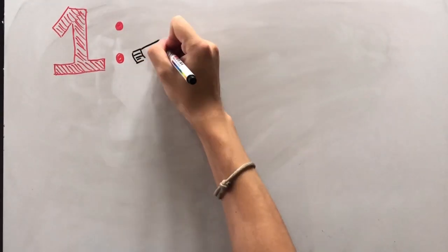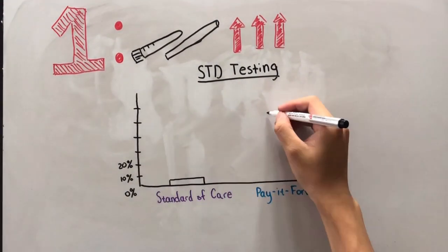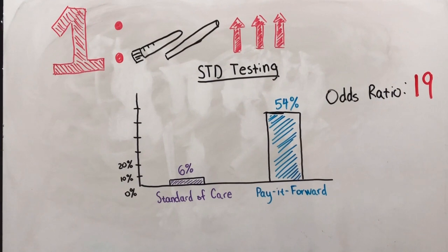More STD testing. Gay men in the pay forward group were 19 times more likely to receive gonorrhea and chlamydia testing compared to the men in the standard of care group.